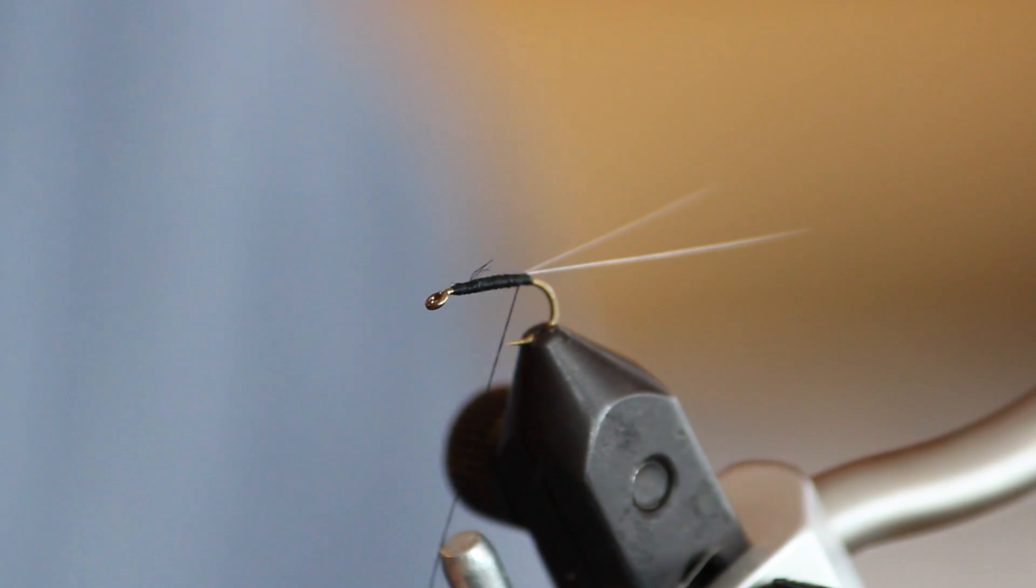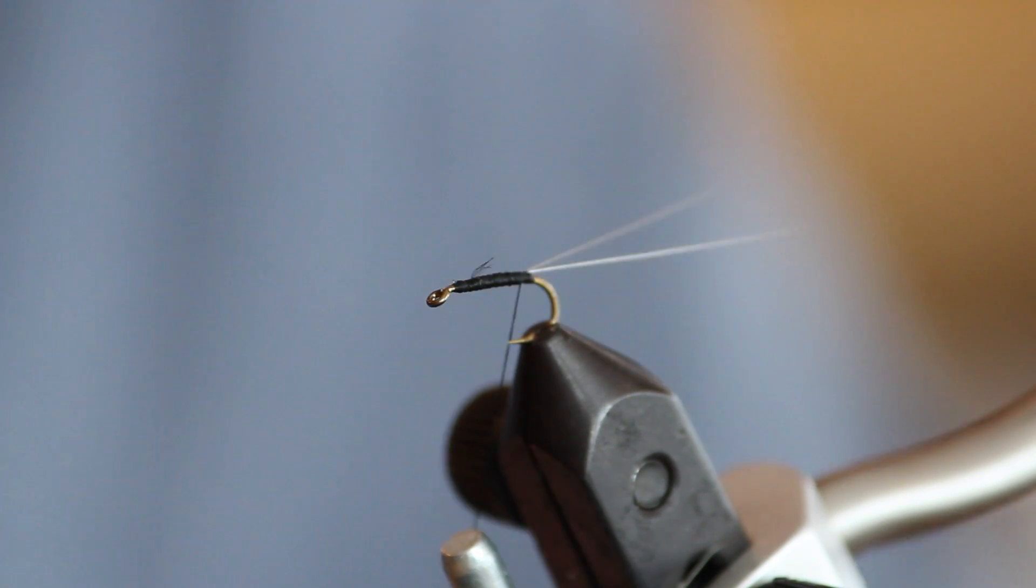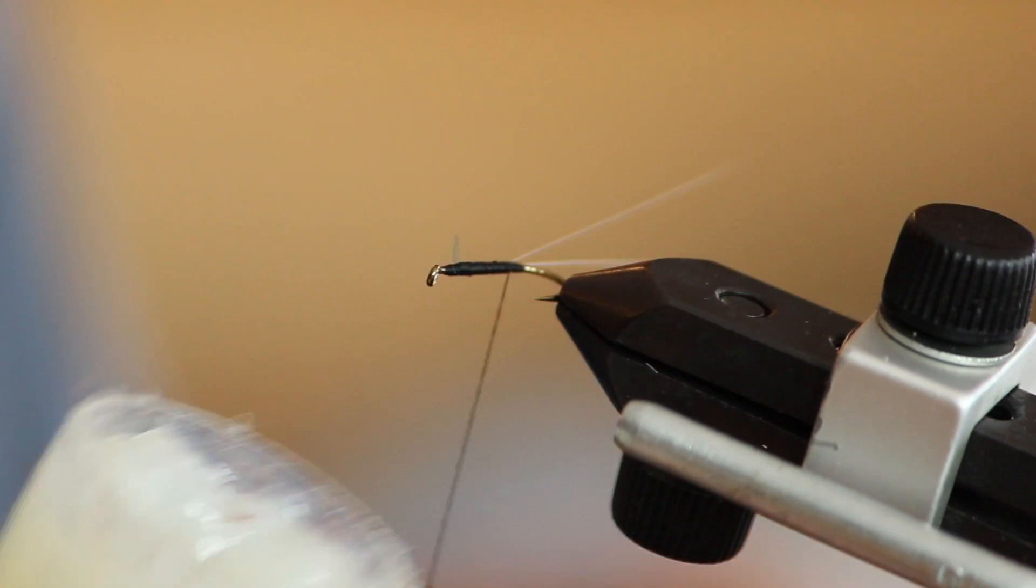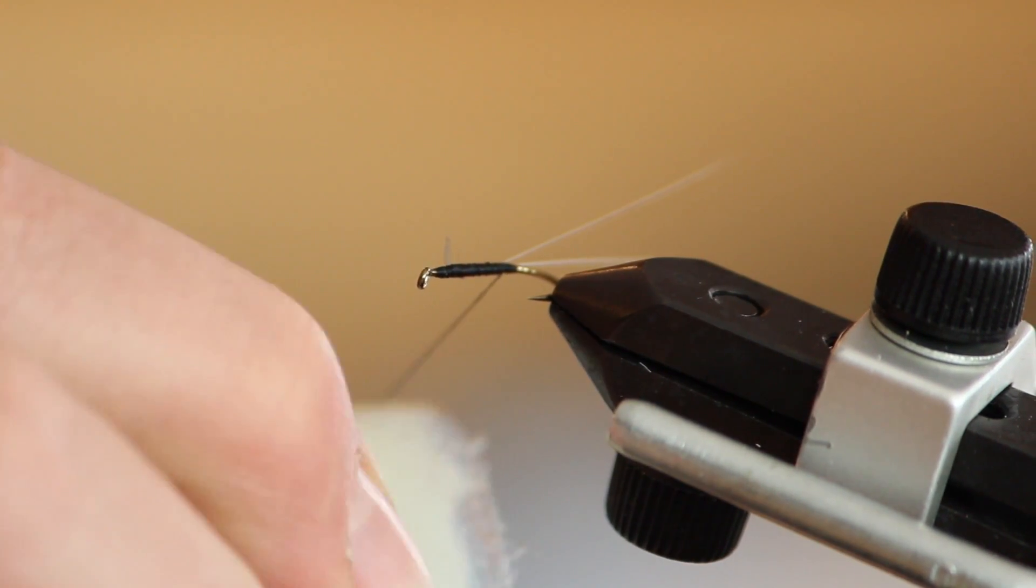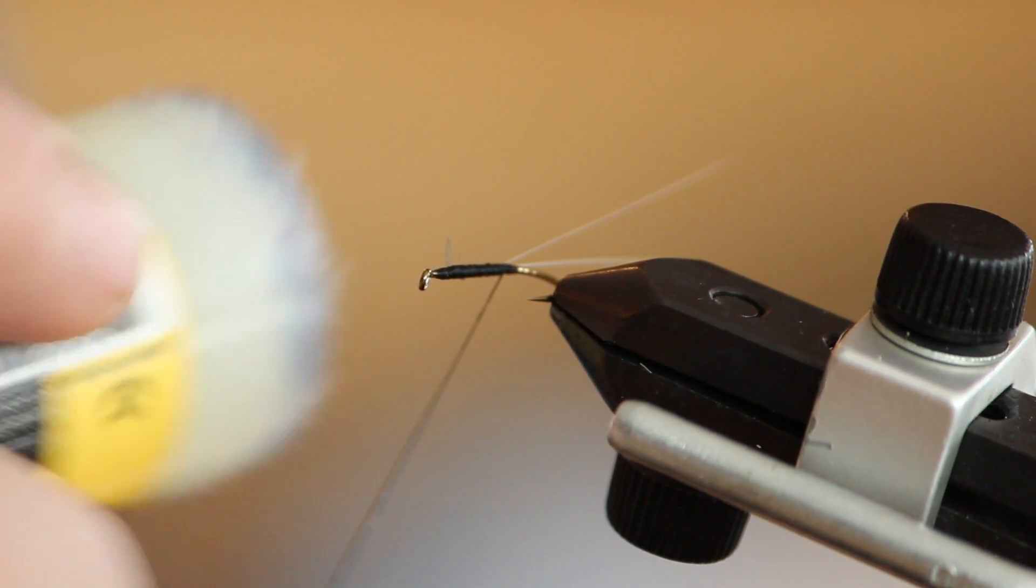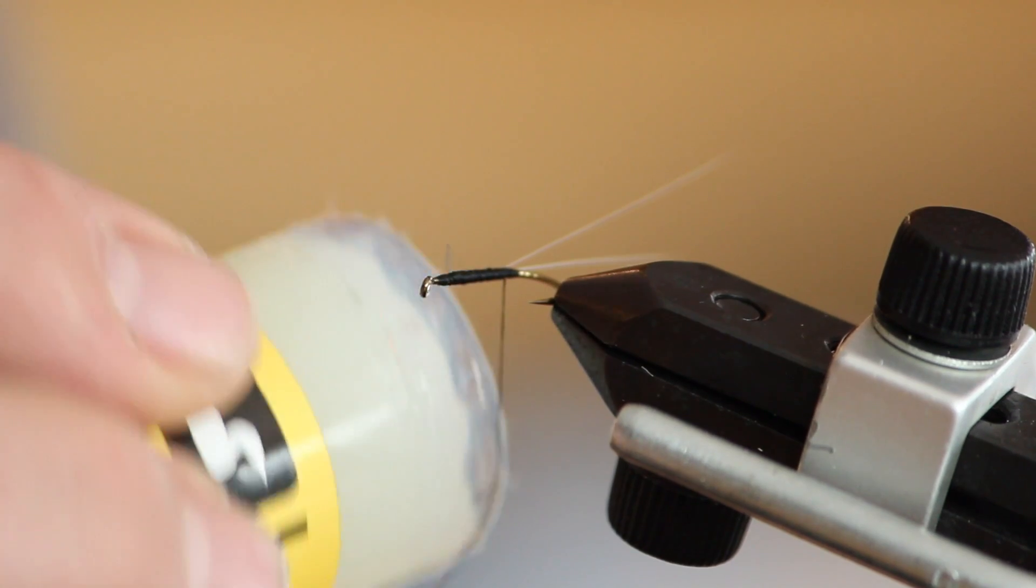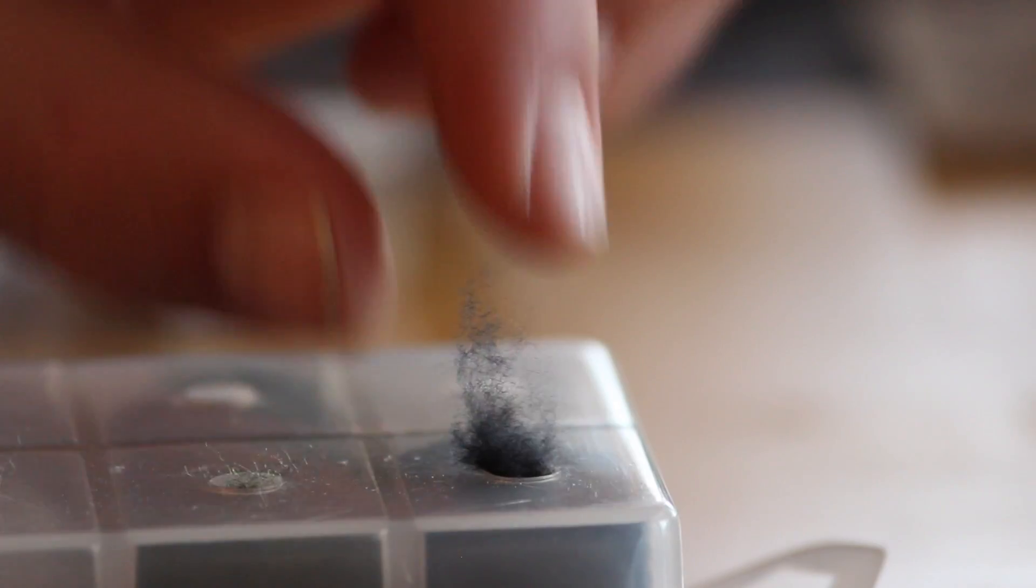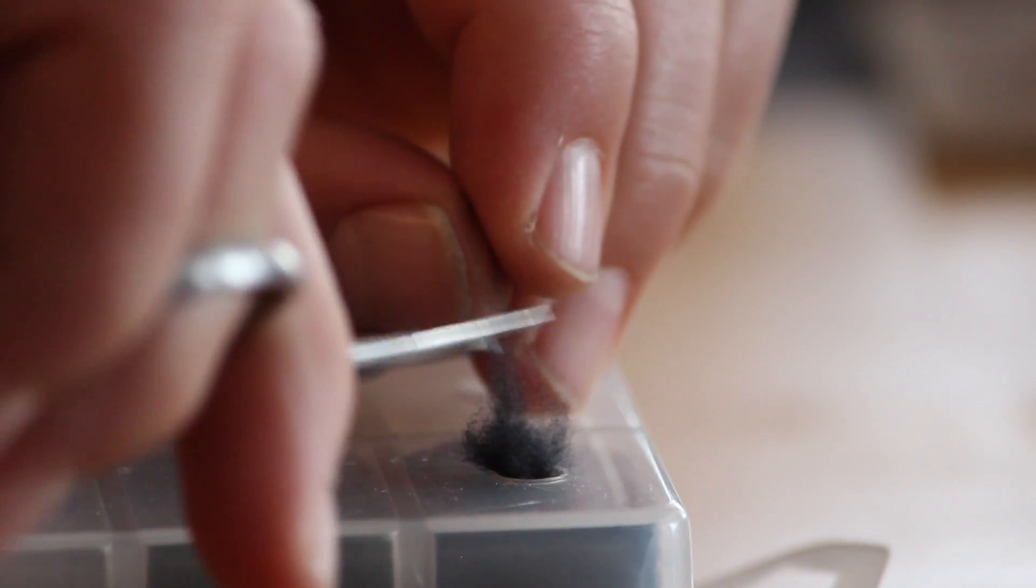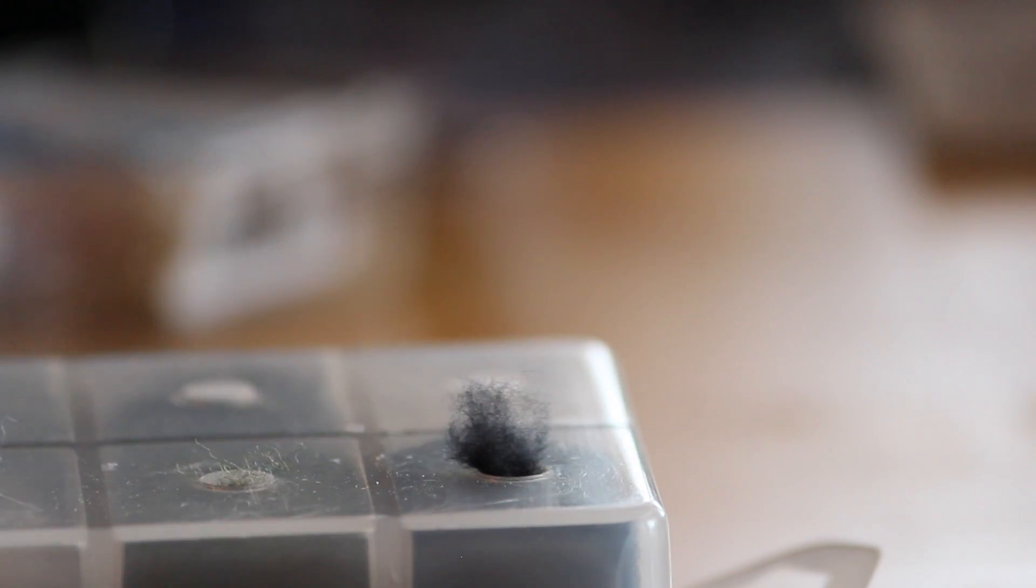Now apply a small amount of dubbing wax onto your thread. For dubbing, use superfine black dry fly dubbing and dub a small noodle onto your thread.